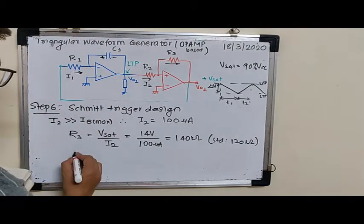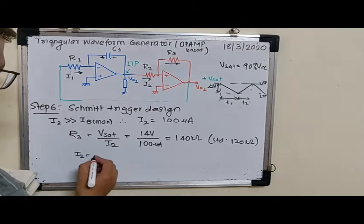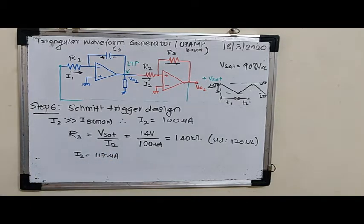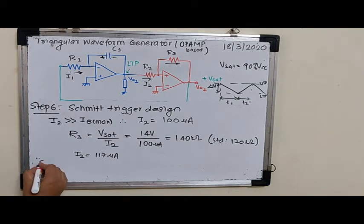Again recalculating I2, so actual value of I2 is again the same thing, 117 microampere. Step 7.